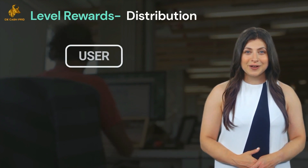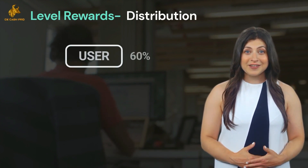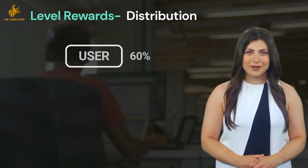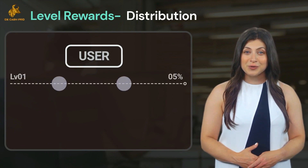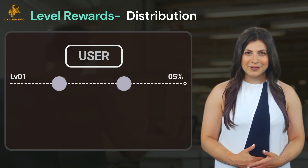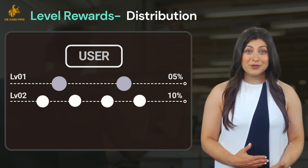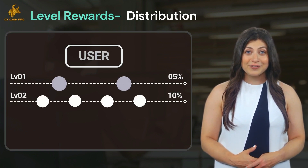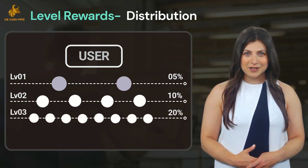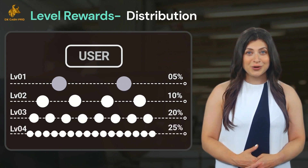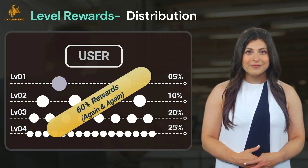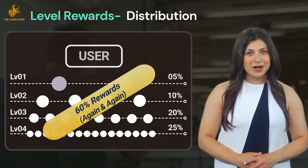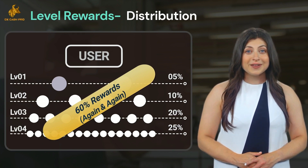If anyone buys a slot using your referral code, 60% of the cost incurred by the buyer is distributed to four-level upline partners. On level one, you get a 5% reward from every two buyers. On level two, you get 10% from every four buyers. On level three, you get 20% from every eight buyers. On level four, you get 25% from every sixteen buyers.